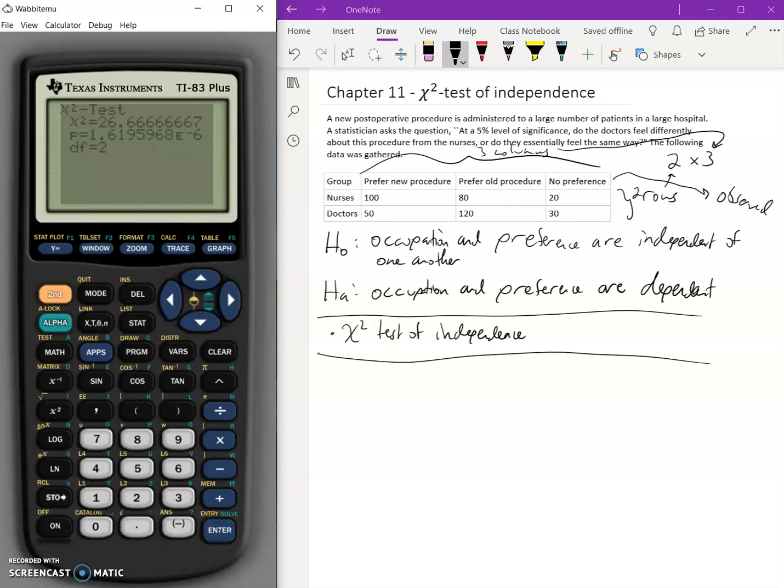Now our chi-squared, this test statistic, chi-squared is equal to 26.67. And our p-value in this case is equal to 0.000016196. Because remember, the E to the negative six means this is in scientific notation. So very, very, very tiny.